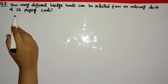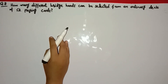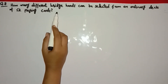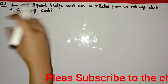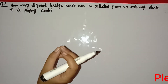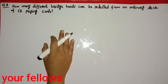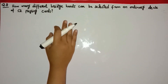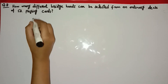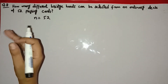Question number 8: How many different bridge hands can be selected from an ordinary deck of 52 playing cards? In bridge, all 4 players each receive 13 cards. Since the cards are distributed randomly with no particular assignment, this is a random selection, so we apply the combination formula.